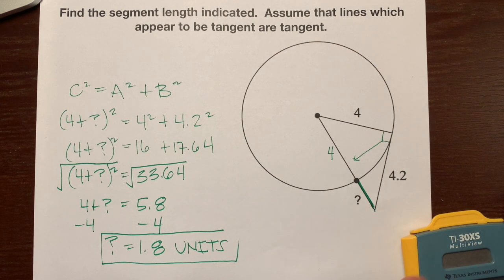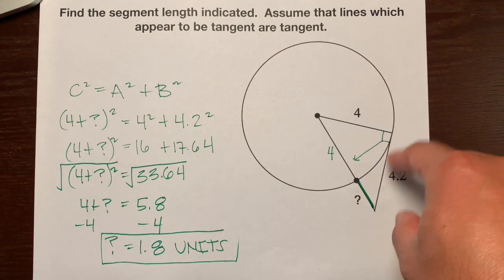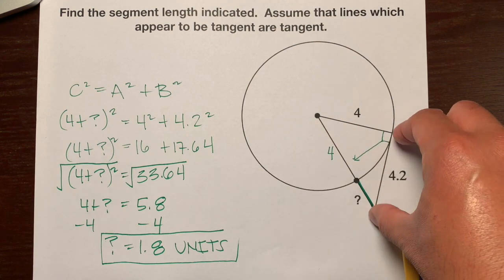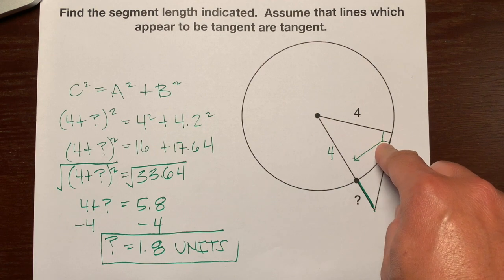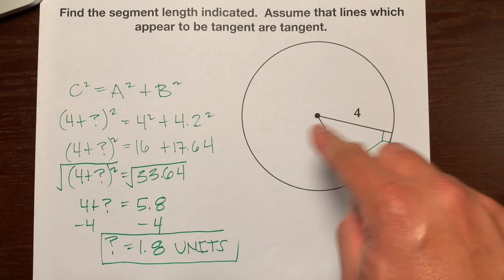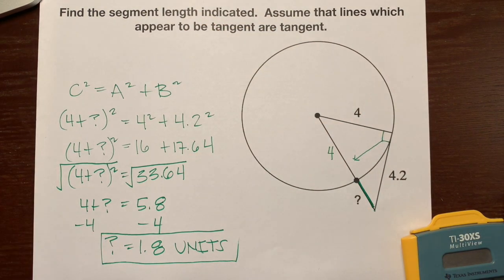And that's how you find a segment length when you have a tangent line and the radius. Just remember that the tangent line and the radius are always perpendicular. And if they make a triangle, they make a right triangle. So just use a Pythagorean theorem. And that's it. I hope that helps. Have a great day.